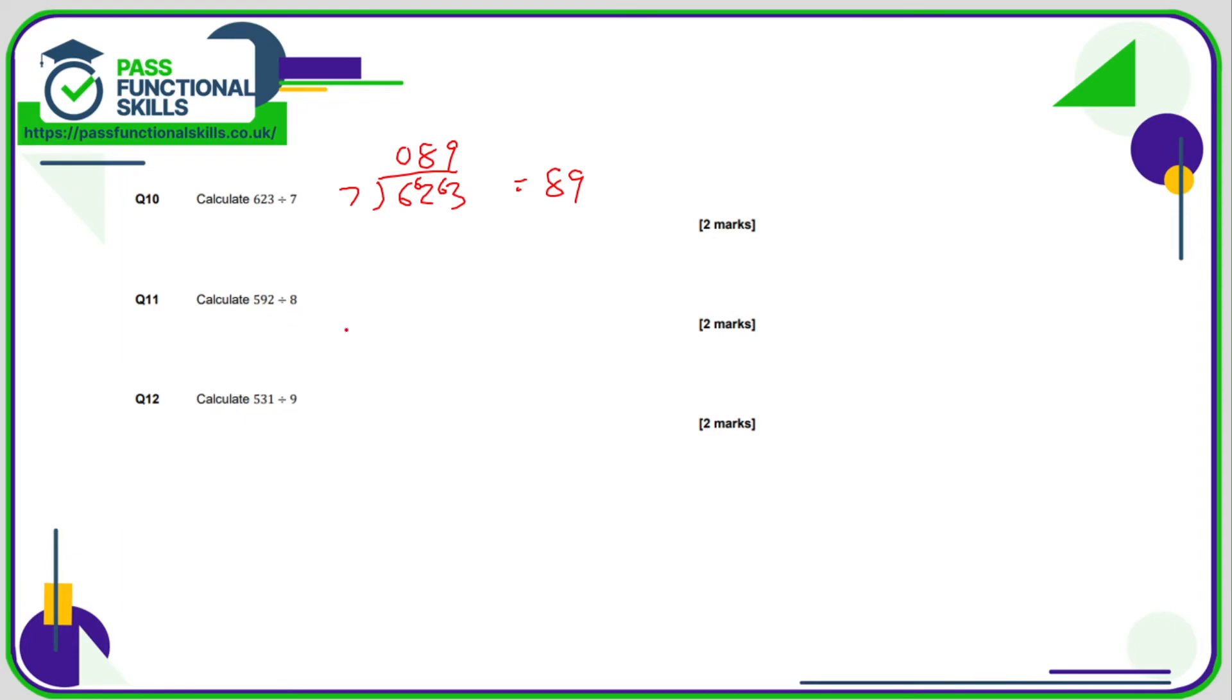Question 11. Maybe write out your 8 times table before you get going. So how many 8's go into 592? 5 divided by 8 is 0, carry the 5. 59 divided by 8 is 7. 7 eights are 56, that's a remainder of 3. 32 divided by 8 is 4, so the answer is 74. And how many 9's go into 531? 5 divided by 9 is 0, carry the 5. 53 divided by 9 is 5. 5 nines are 45, so that's a remainder of 8. 81 divided by 9 is 9, so the answer is 59.